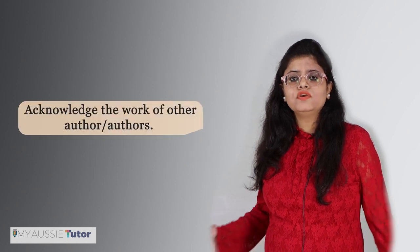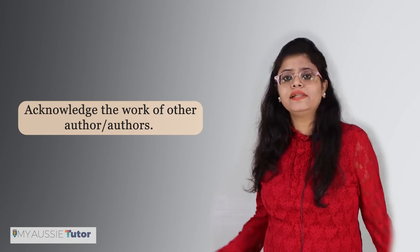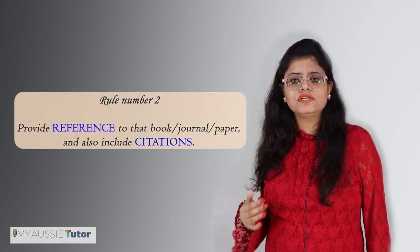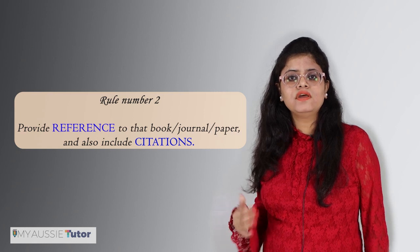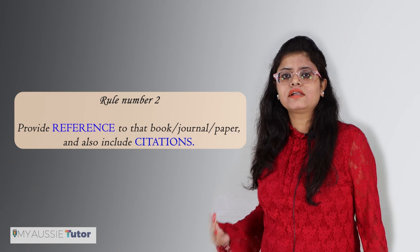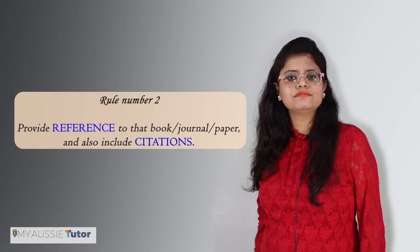Rule number two: you must acknowledge the use of work of other authors. You do that by including references in your work. Whenever you have referred to any books, journals, articles, or papers written by any other author, or you have taken any ideas or information from their work, you must provide a reference to that book, journal, or article, and also include a citation. That's rule number two — I hope this helps.